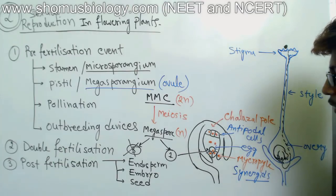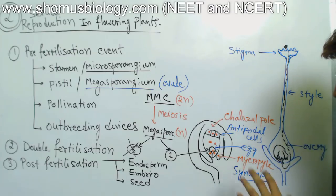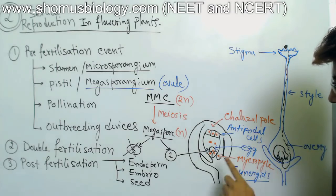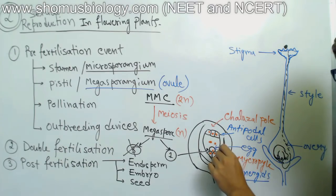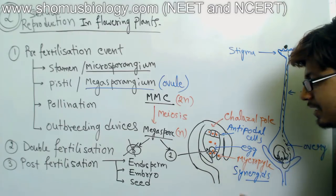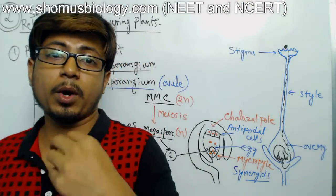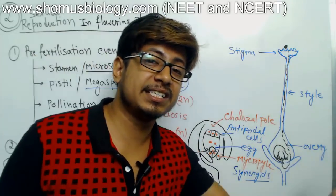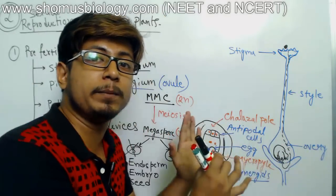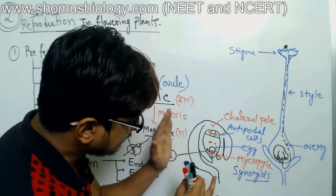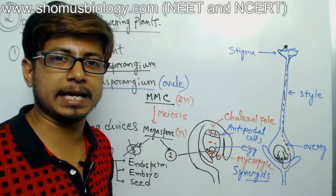So that's the whole distribution: three antipodal cells, two synergids, one egg cell — totaling six — plus one large central cell with two nuclei. So we have seven cells and eight nuclei in total. We call this the seven-celled, eight-nucleate stage of embryo sac formation. This is the pre-embryonic state of the female reproductive system of the flower, a perfect ready situation just before fertilization.